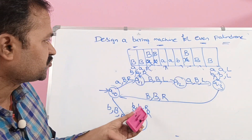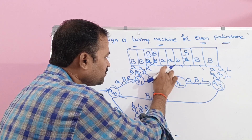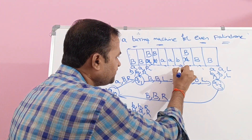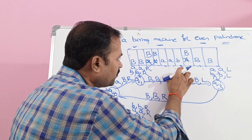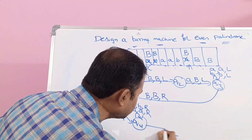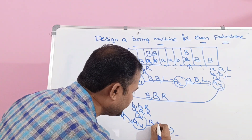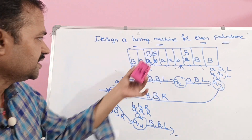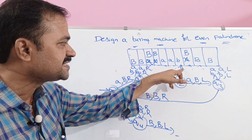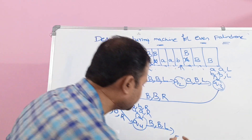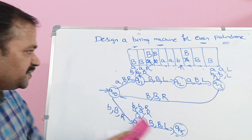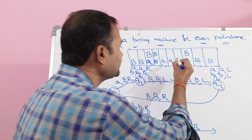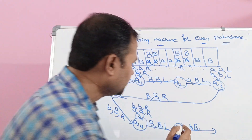Now we are at this position. If we apply any number of A's, each A is kept as A and the head moves one position to the right. Each B is kept as B and the head moves one position to the right. When we reach the blank symbol on Q4, we keep it and move the head one position to the left. The second symbol from the left is B, and the second symbol from the right is also B. The next state is Q5. This B is replaced with B and likewise the corresponding B is replaced with B, moving the head one position to the left.